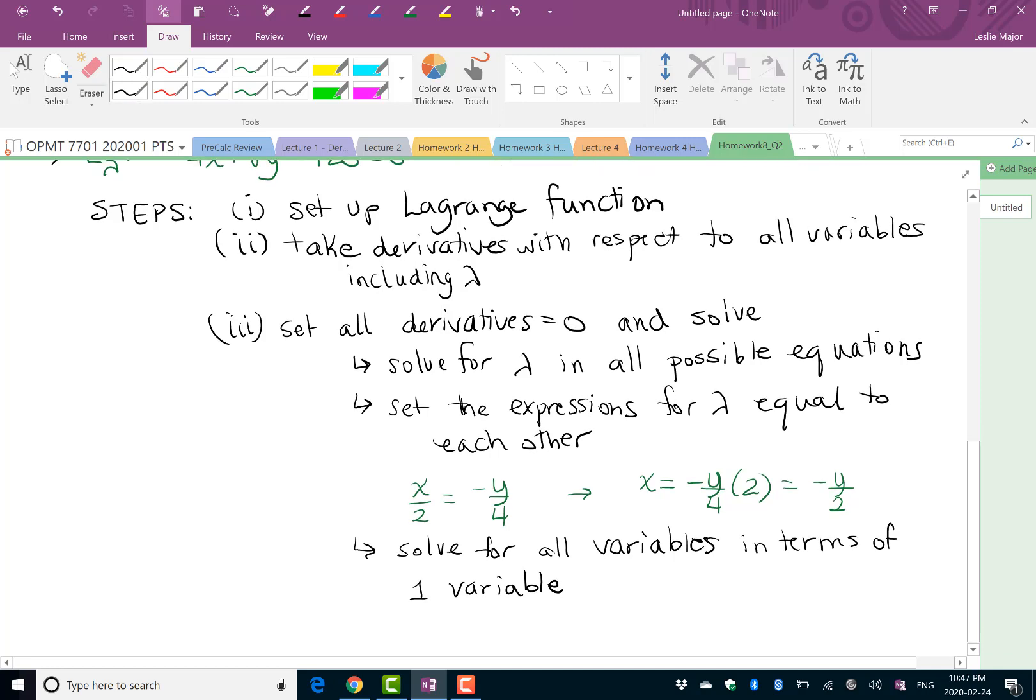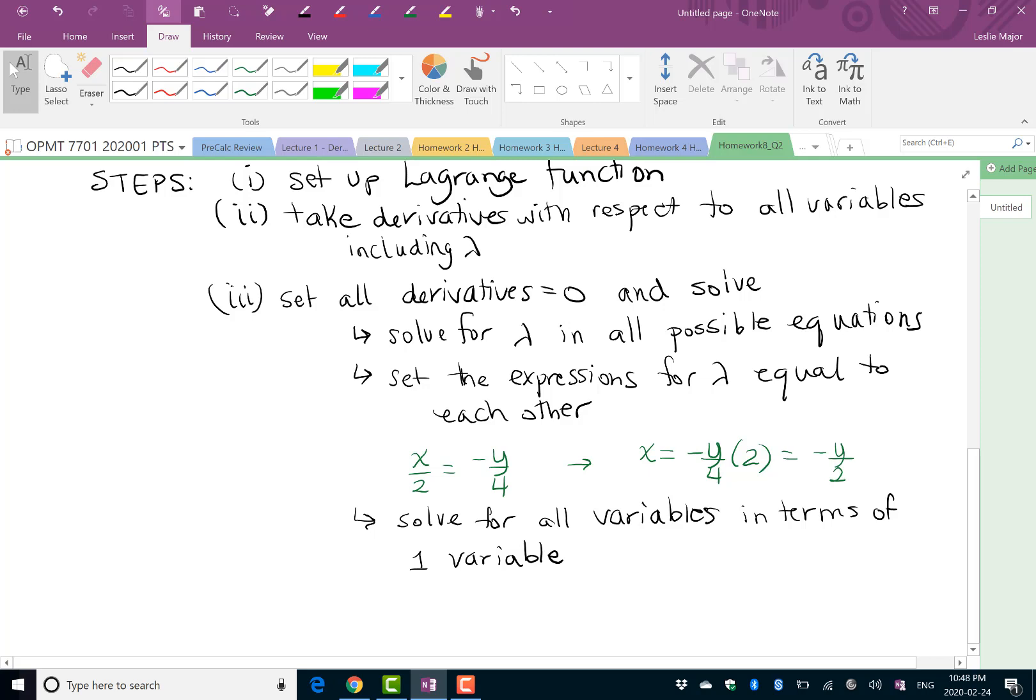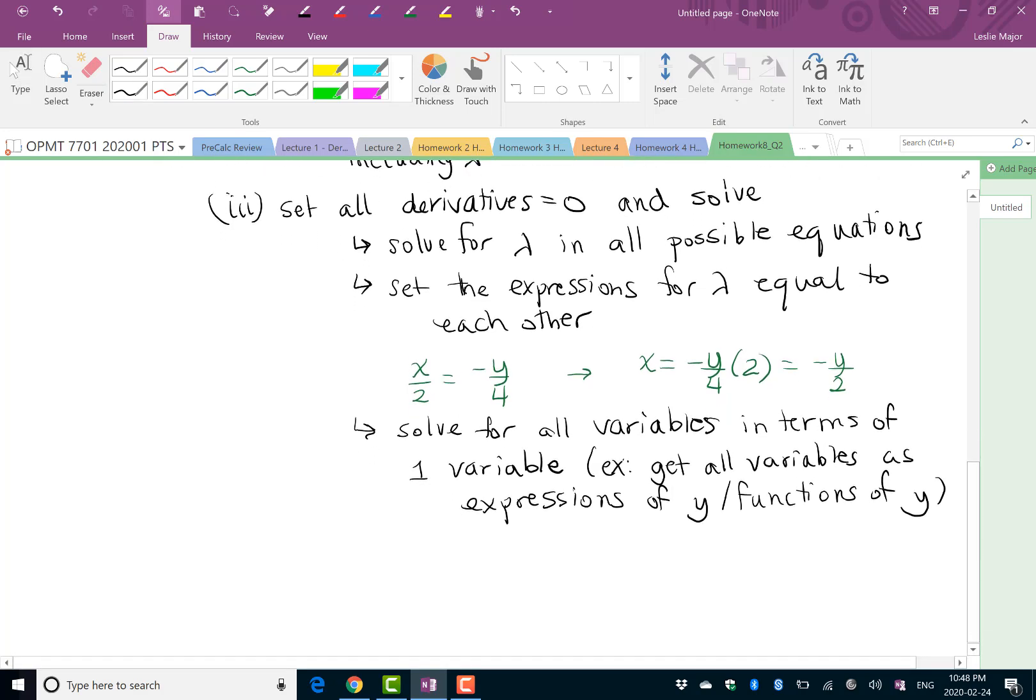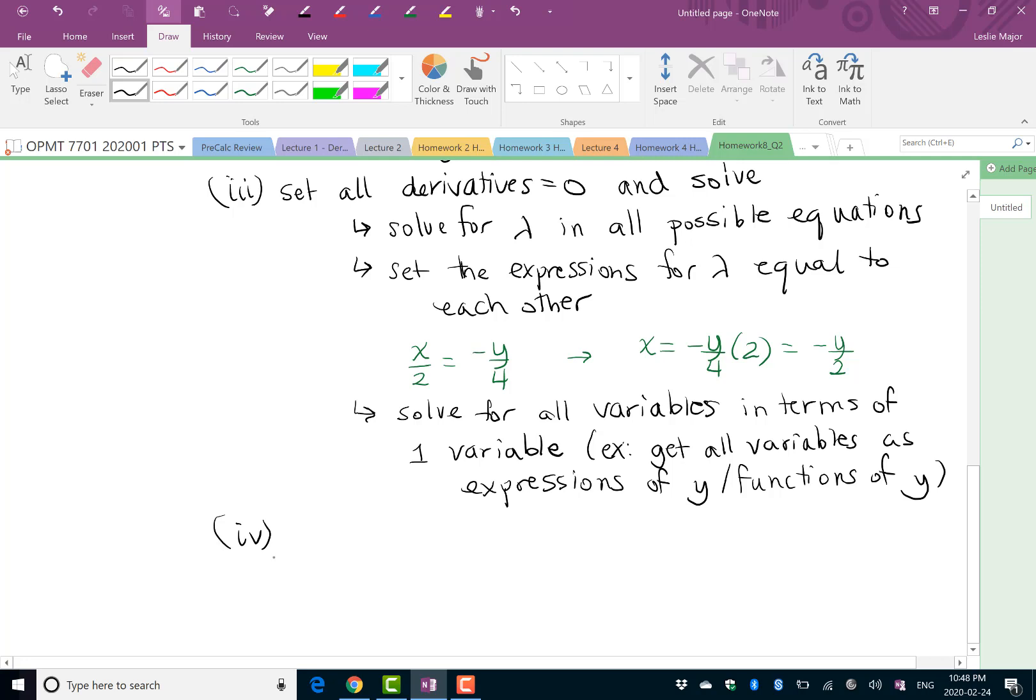After that, we solve for all variables in terms of one variable. We only have x and y, so get all variables as expressions of one variable. In this case, we got x as an expression of y. Then once we get all of those expressions, we plug all the expressions derived into the constraint.